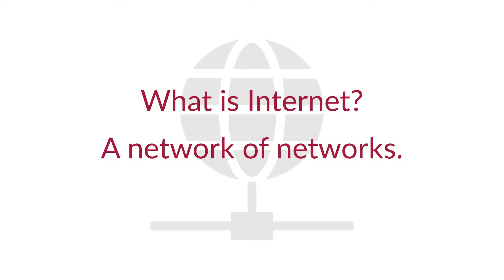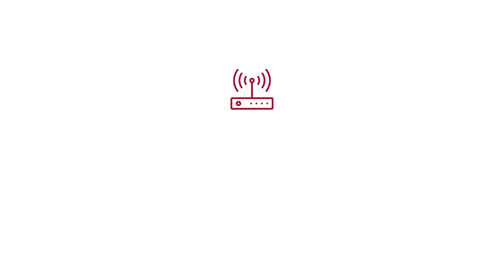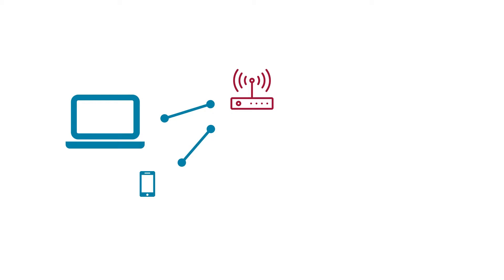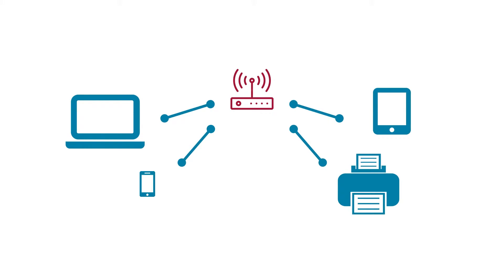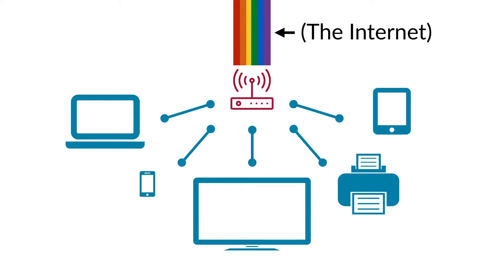The internet, put simply, is a computer network that is made up of many other computer networks. Think of a network you might have in your home. You have a router, which may be provided by your internet service provider or ISP, and that router is a tiny, simple computer that manages your home network — including your computer, your smartphone, and maybe a tablet, a printer, or an internet-connected television. Your home network is then connected to your ISP's network, which is also managed by routers, though much bigger and more powerful than yours at home.